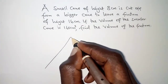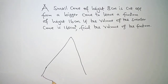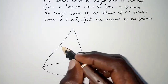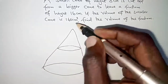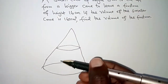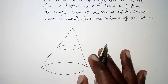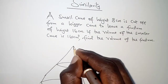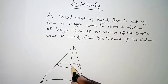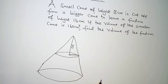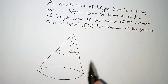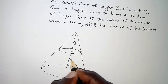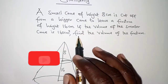We can have the information sketched in this diagram. We have a bigger cone, and then a smaller cone is cut off — this upper part is cut off, and the lower part is now the frustum that we are left with. The height of the small cone is 8 centimeters, and the height of the frustum is 16 centimeters from that point to the bottom.